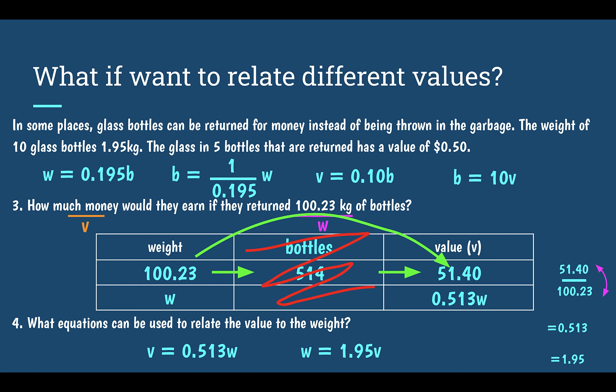And those are our two equations we can use to relate value to weight. So in the future, if we want to figure out how much the restaurant would earn based on kilograms of bottles, we can just take the weight, multiply by 0.513, and it will tell you how much money they should earn.